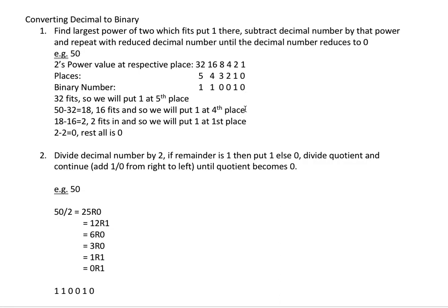The second method. In the second method what you do is you divide the decimal number by 2. If remainder is 1 then put 1, else 0. Then divide the quotient and continue until quotient becomes 0. We will put the 1 or 0 from right to left in this process.